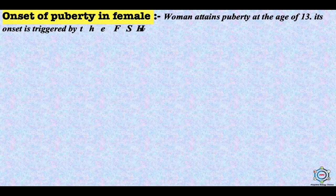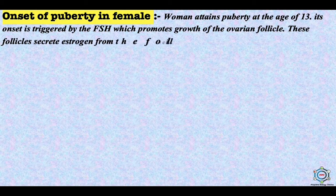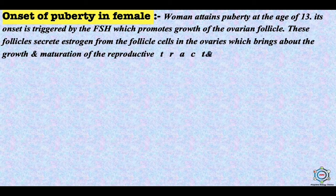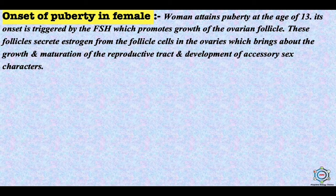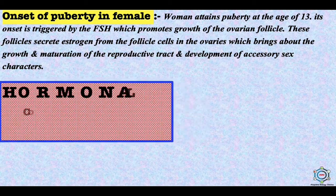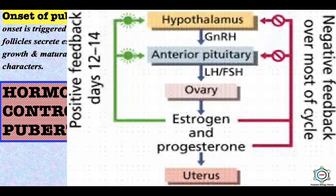The onset of puberty in females occurs at age 13. It is triggered by FSH, which promotes growth of ovarian follicles. These follicles secrete estrogen from the follicle cells in the ovaries, which brings about growth and maturation of the reproductive tract and development of accessory sex characters. Regarding hormonal control during puberty: the anterior pituitary causes the release of FSH and LH, and the ovaries release estrogen and progesterone for uterine functioning. When secreted in excess, these give negative feedback to the anterior pituitary and hypothalamus to stop secretion.